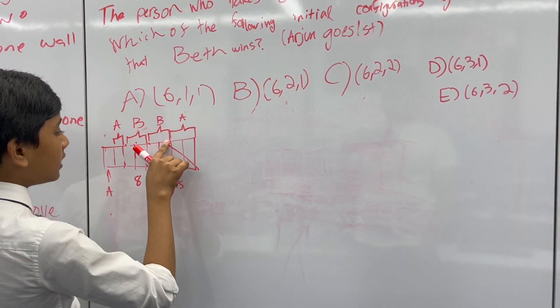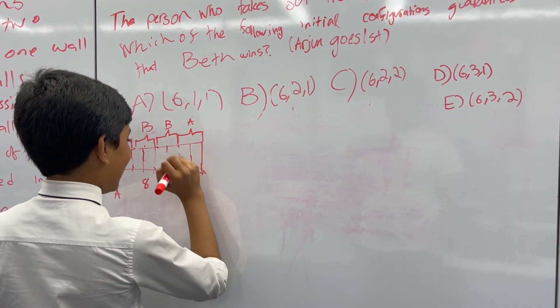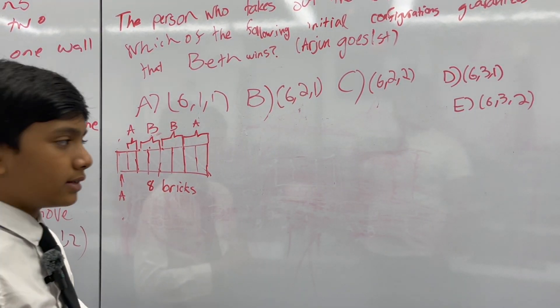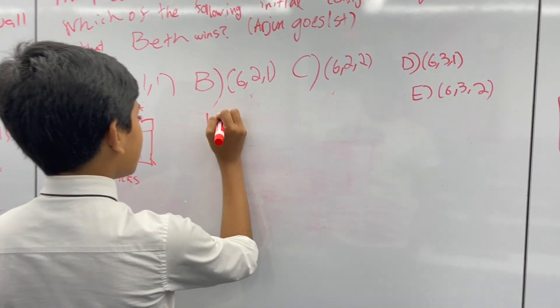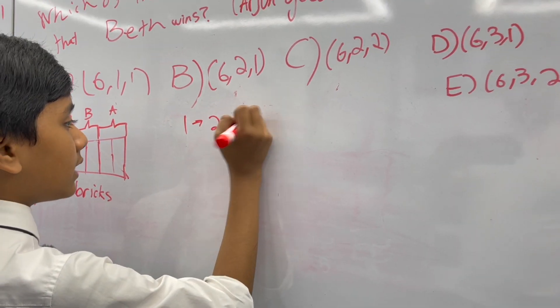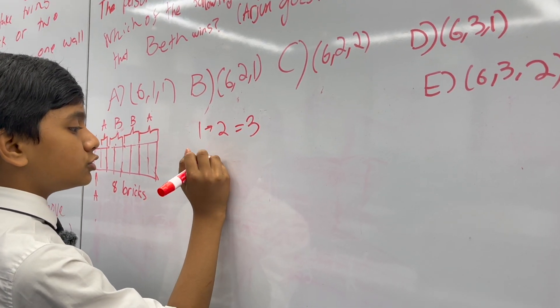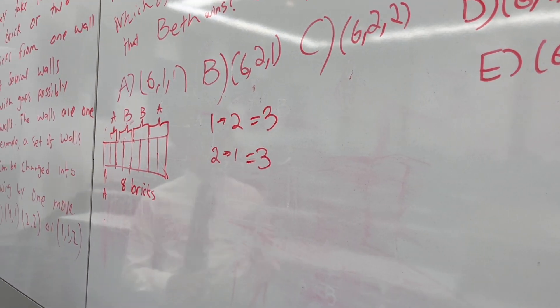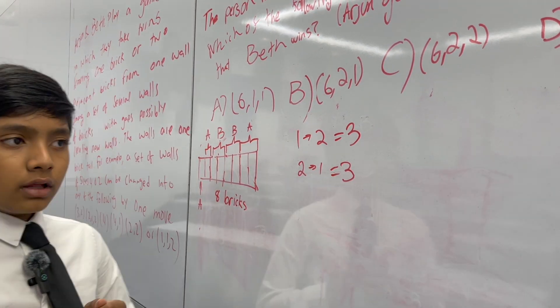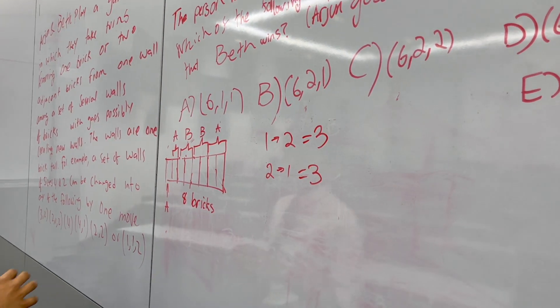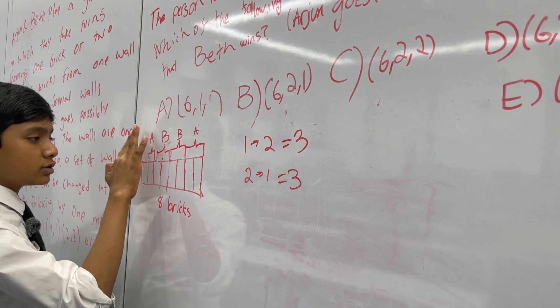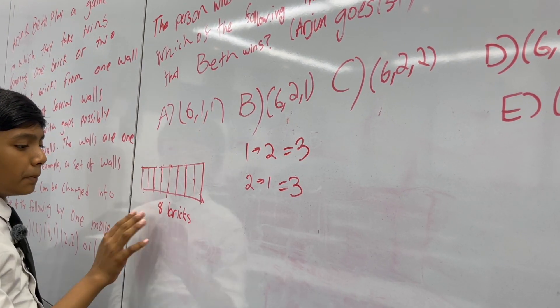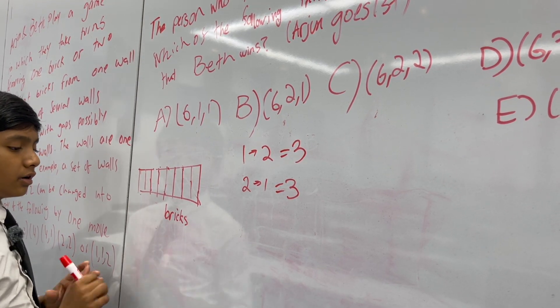The thing is, if Beth can mirror his movements, then she can easily get to the end. Because if Arjun makes one and Beth makes two, that in total sums up to three. If Arjun does two and Beth does one, that also sums up to three. So no matter what, Beth can always remove three consecutive bricks, no matter what Arjun does.